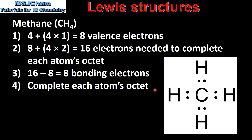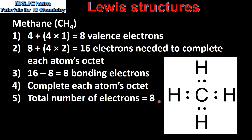We put the carbon atom in the centre and bond each hydrogen atom with 2 electrons. Step 4 is to complete each atom's octet. The carbon atom already has 8 valence electrons and each hydrogen atom already has 2 valence electrons. Finally, we count the total number of valence electrons in the molecule — there are 8, which is the same as we calculated in step 1.